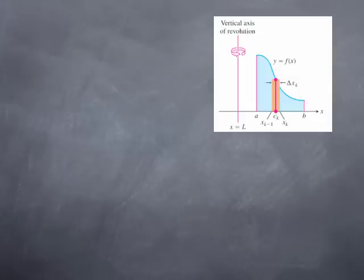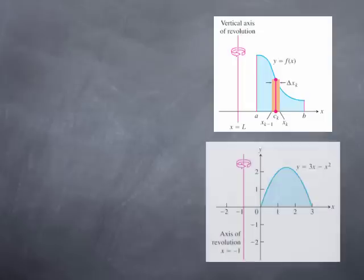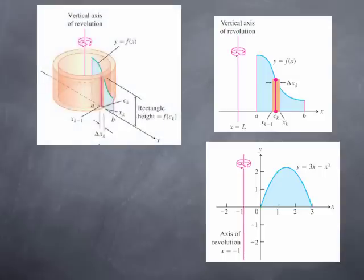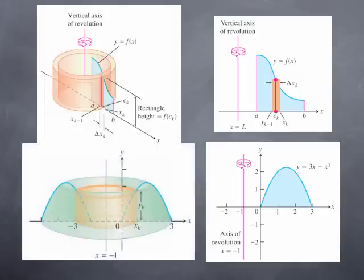We have the area under the graph of a function that we want to rotate about a vertical line. We approximate the area by rectangles, as we did when we first studied areas. Now we rotate each rectangle about the vertical line, and that generates what we call a cylindrical shell. In the case of our first example, the cylindrical shell would look like that on the picture of the solid of revolution.